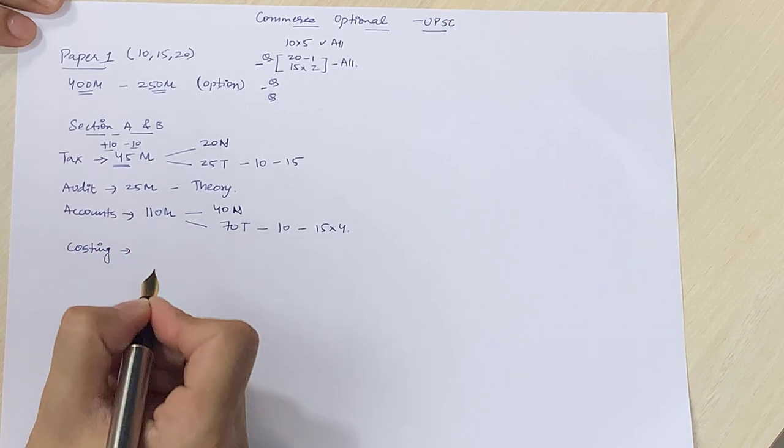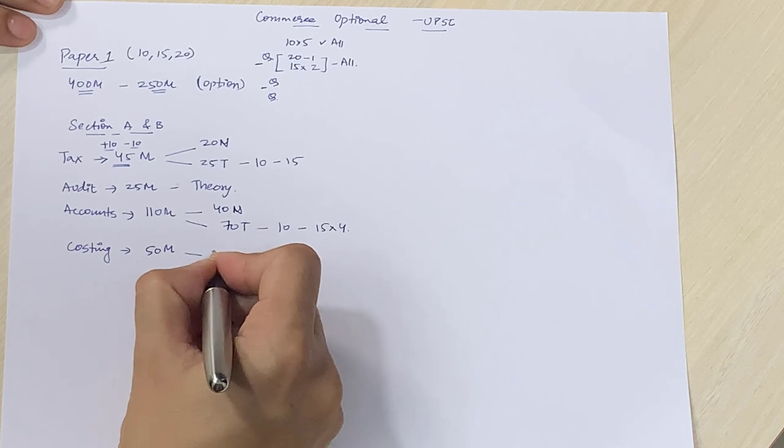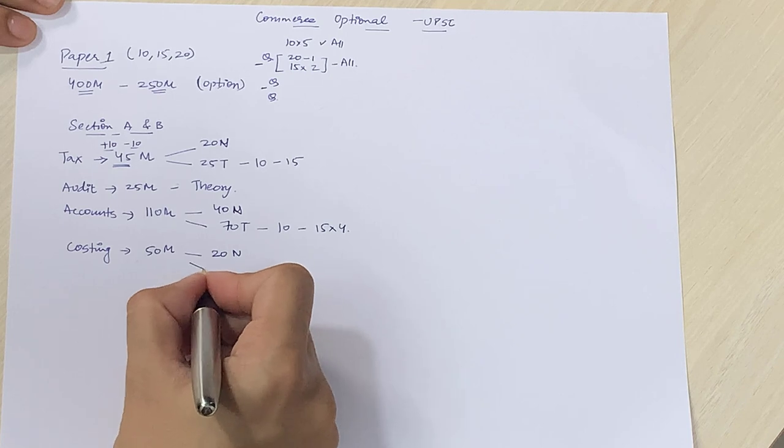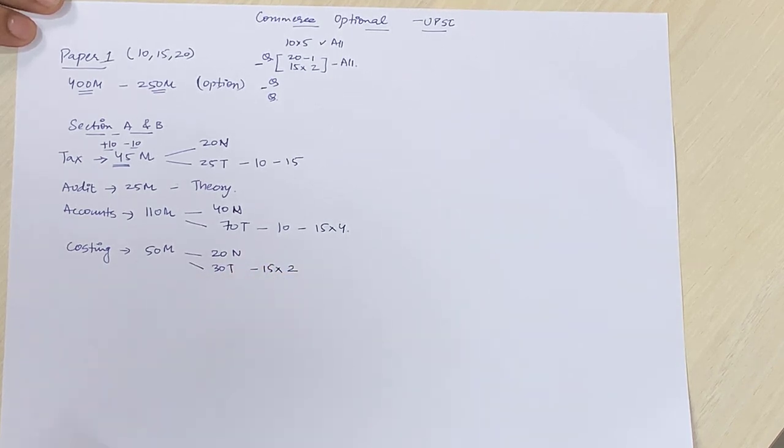Next aatah hai costing. Costing mein normally around 50 marks ke questions aate hain. Which is divided as 20 marks numerical. And 30 marks theory. Jis meh ki 15 number ke 2 questions hoote hain.